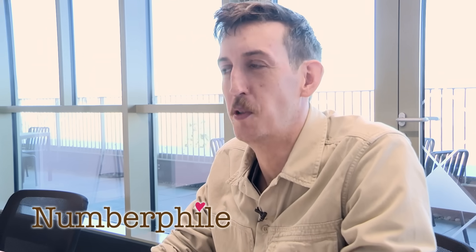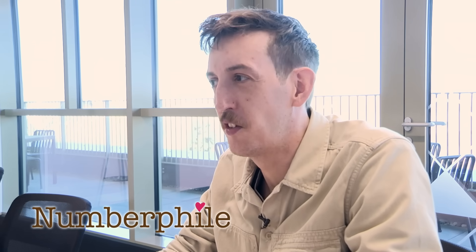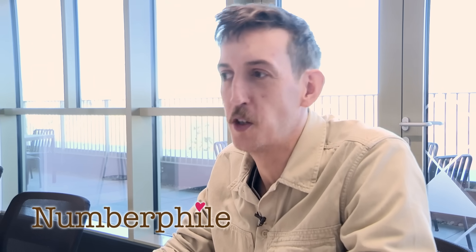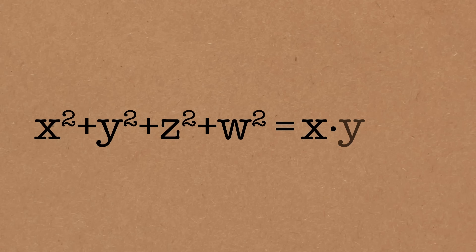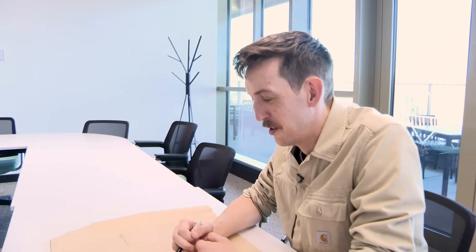I want to tell you about something very simple that leads to very weird behaviour. Take four numbers x, y, z and w, and we want the sum of their squares to be equal to their product x times y times z times w. And we want x, y, z and w to be whole numbers — let's say positive. Presumably there are solutions to that equation?